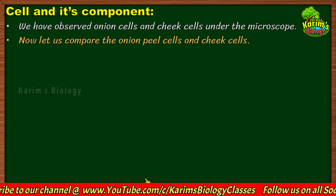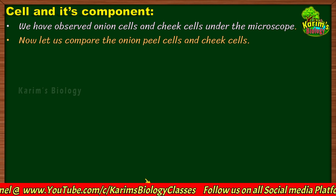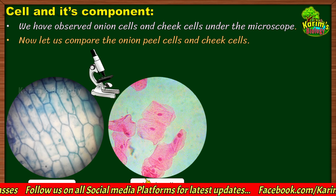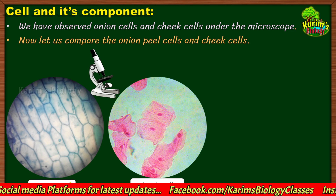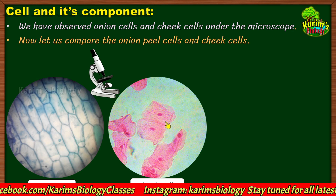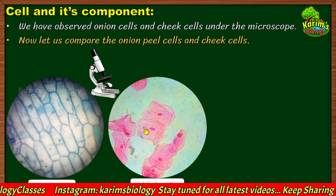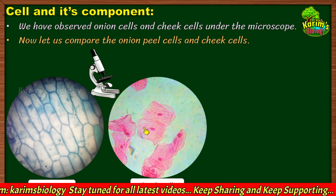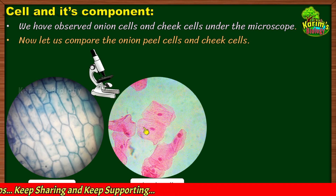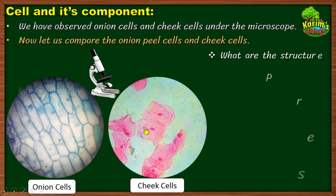Now let us make a comparison between onion cells and cheek cells — how they appeared under the microscope and what are the differences and similarities we noticed. Let me first show you the pictures. This is how onion cells appear under the microscope, and this is how cheek cells appear. Remember, for both cells they are colored because we added stain so that we can observe the cells clearly. I am going to ask you a few questions, so carefully observe these two cells. The first question: what are the structures present in the cells — the onion cells and cheek cells?